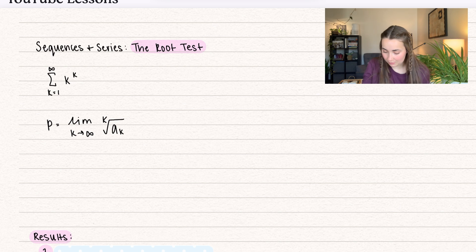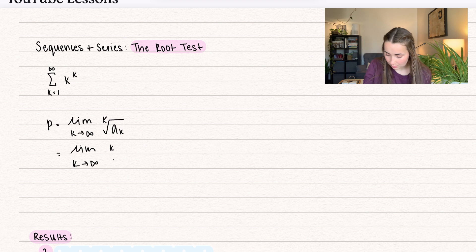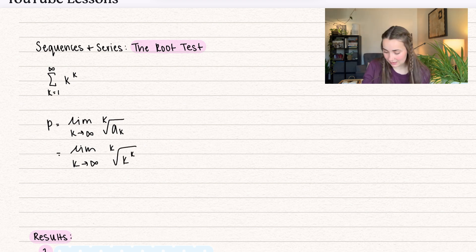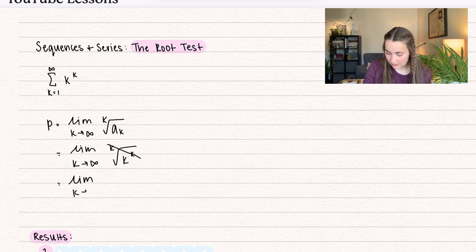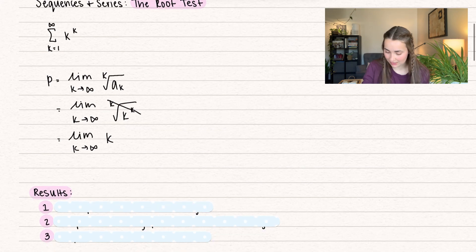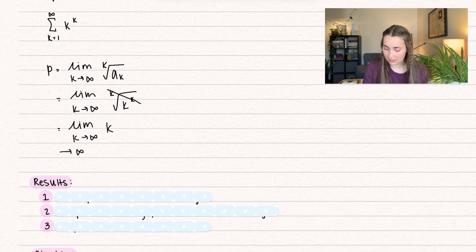Notice what would happen if we try to do that for our actual series. We have the limit as k approaches infinity of the kth root of k to the power of k. The purpose of the root test is that it gets rid of that power of k, so we have the limit as k approaches infinity of just k. When we plug in infinity, that's going to diverge to infinity — so this series diverges.